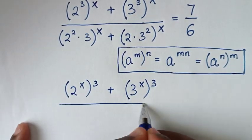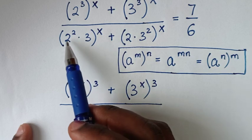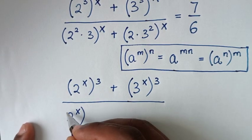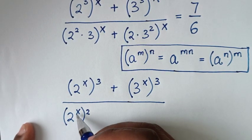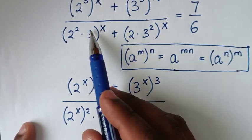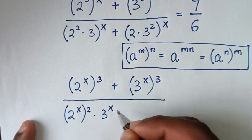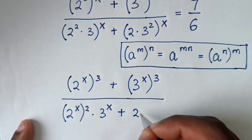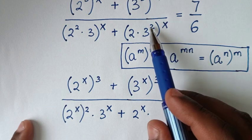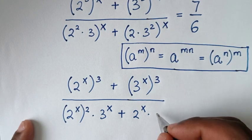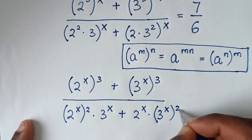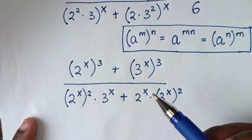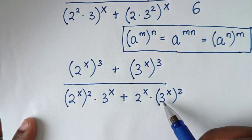For the denominator: 12^x gives us 2^(2x)×3^x, and 2^(2x) is the same as (2^x)² because 2x equals x times 2. Then times 3^x. Plus 18^x gives us 2^x times 3^(2x), and 3^(2x) is the same as (3^x)². So 2^x is common in both terms.